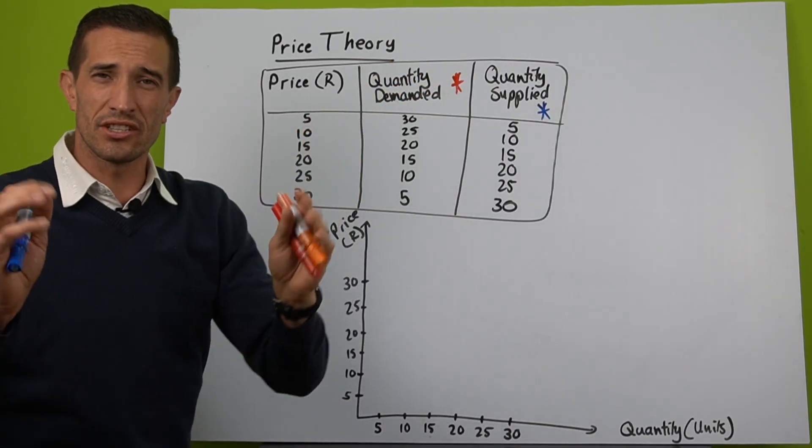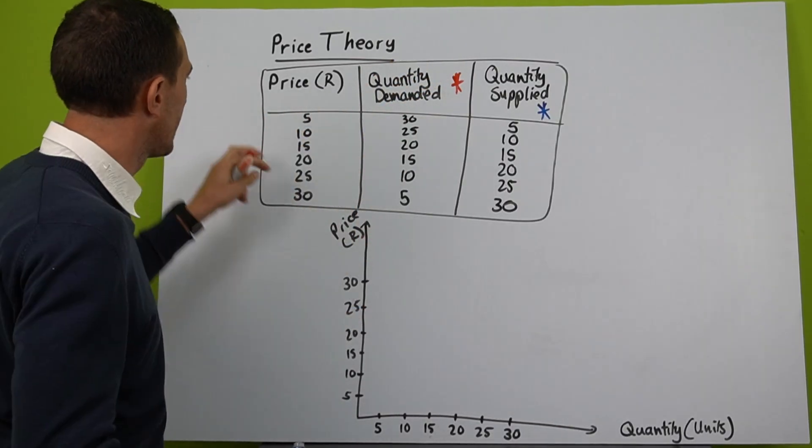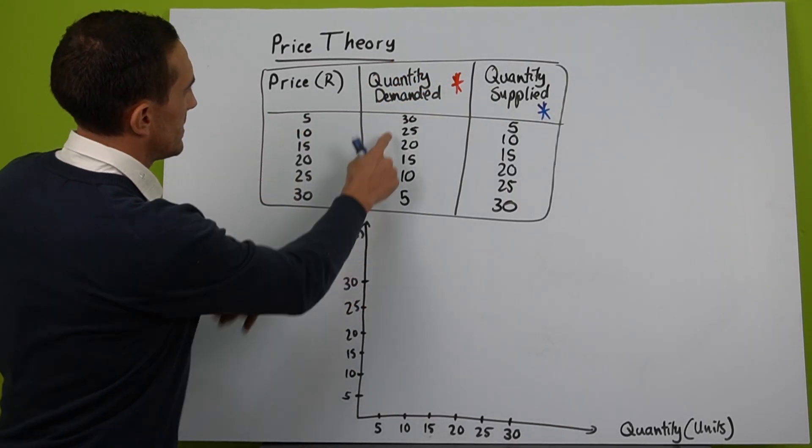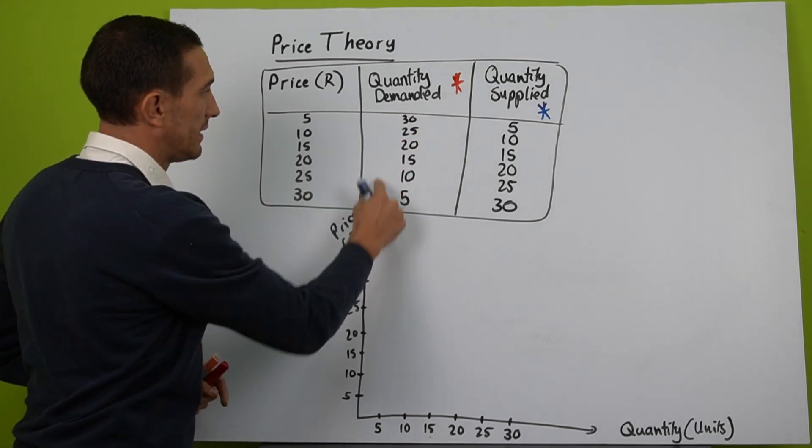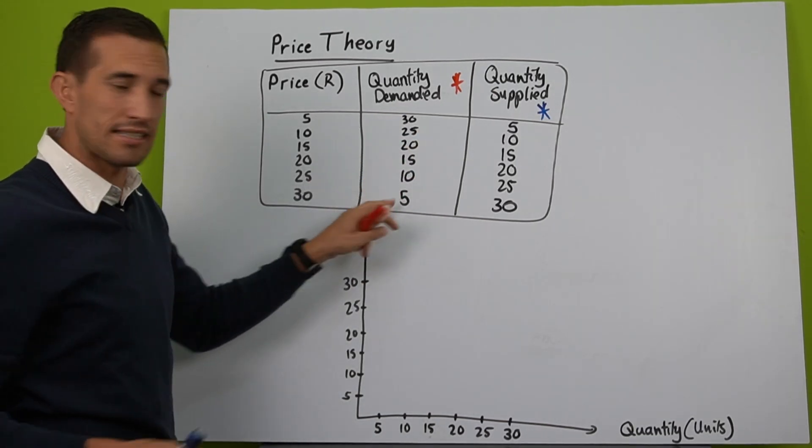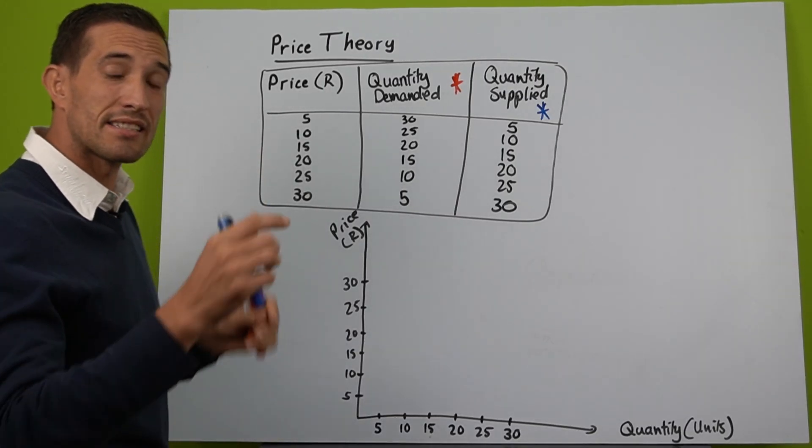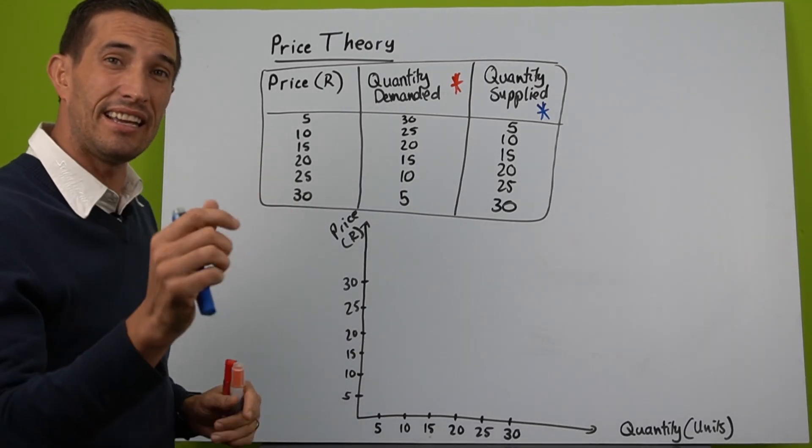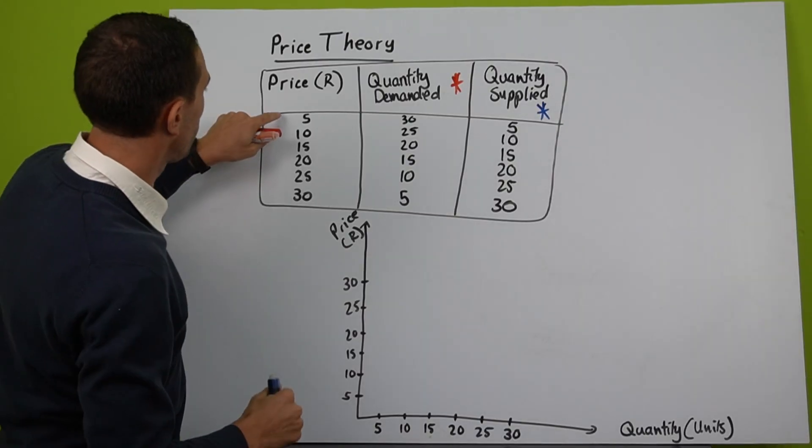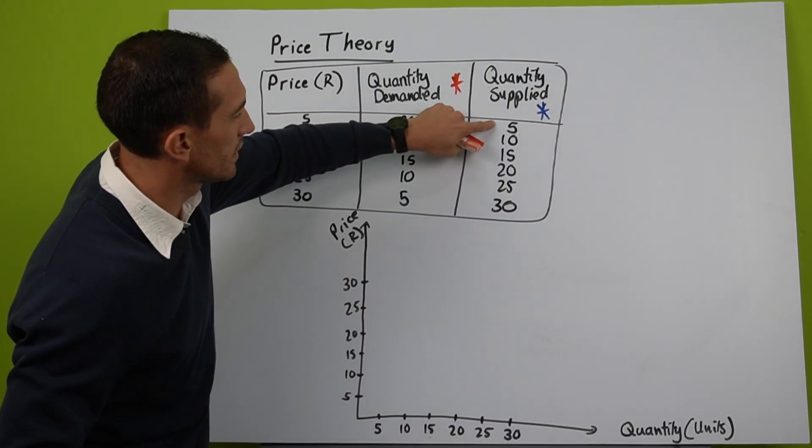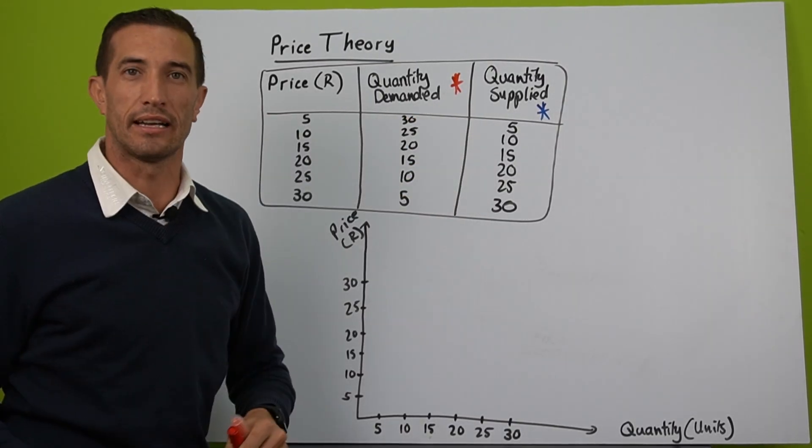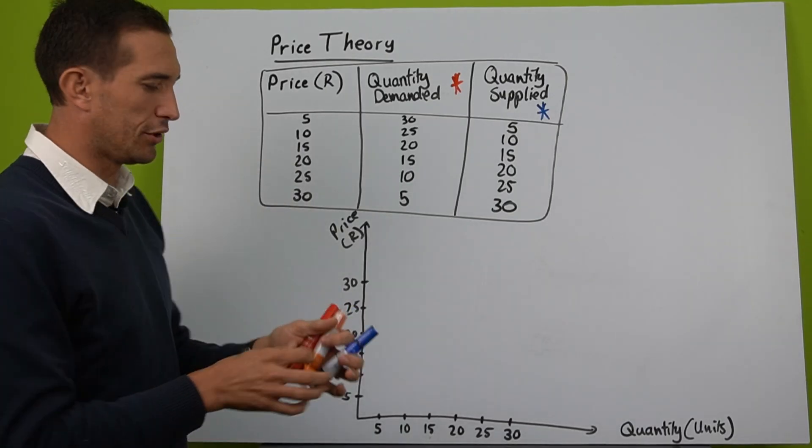Just again to say, what's the law of demand? There's an inverse relationship, so that says if price increases my demand will decrease. You can see the units decrease when the price increases. But with the law of supply it's quite the opposite, it's a direct relationship. If the price increases my quantity supply will also increase.